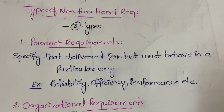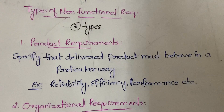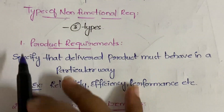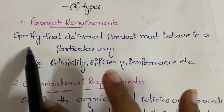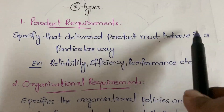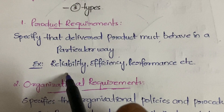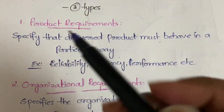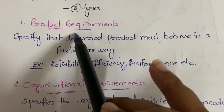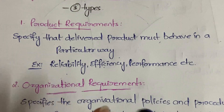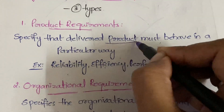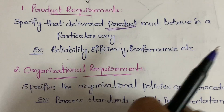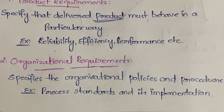In non-functional requirements we have three types: product requirements, organizational requirements, and external requirements. Product requirements specify that the delivered product must behave in a particular way — it has to have reliability, so-and-so efficiency, so-and-so performance. Product requirements specify the qualities that the delivered software must have.